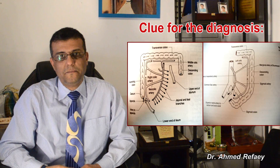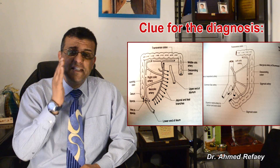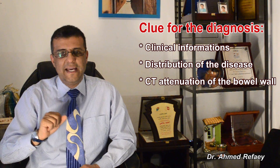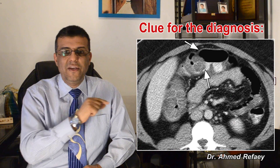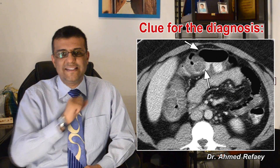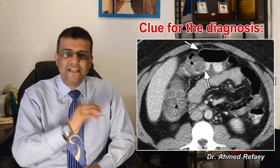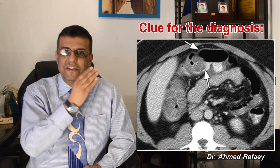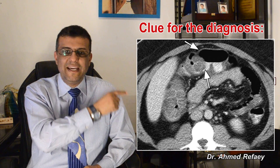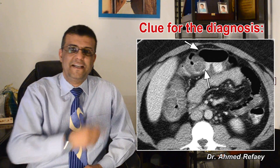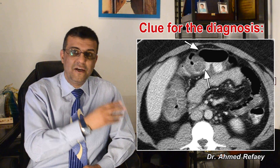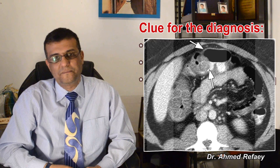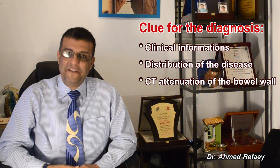The distribution of ischemic colitis usually respects the vascular distribution. As you see in this case, there is marked thickening of the hepatic flexure and the right colon, with an abrupt transition between the abnormal and the normal wall in the transverse colon. This is a typical case of ischemic colitis due to its respect of the vascular distribution.